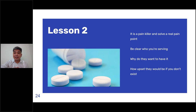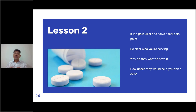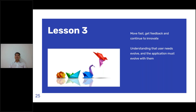The second lesson: make sure your generative AI application is a painkiller, not a vitamin — that it is solving a real-world problem. Be clear about exactly what problem you are solving, who you are serving, and why they want it. One framework we use is asking users how upset they would be if your solution didn't exist. That is a useful way to understand whether your generative AI application is a painkiller rather than a vitamin.